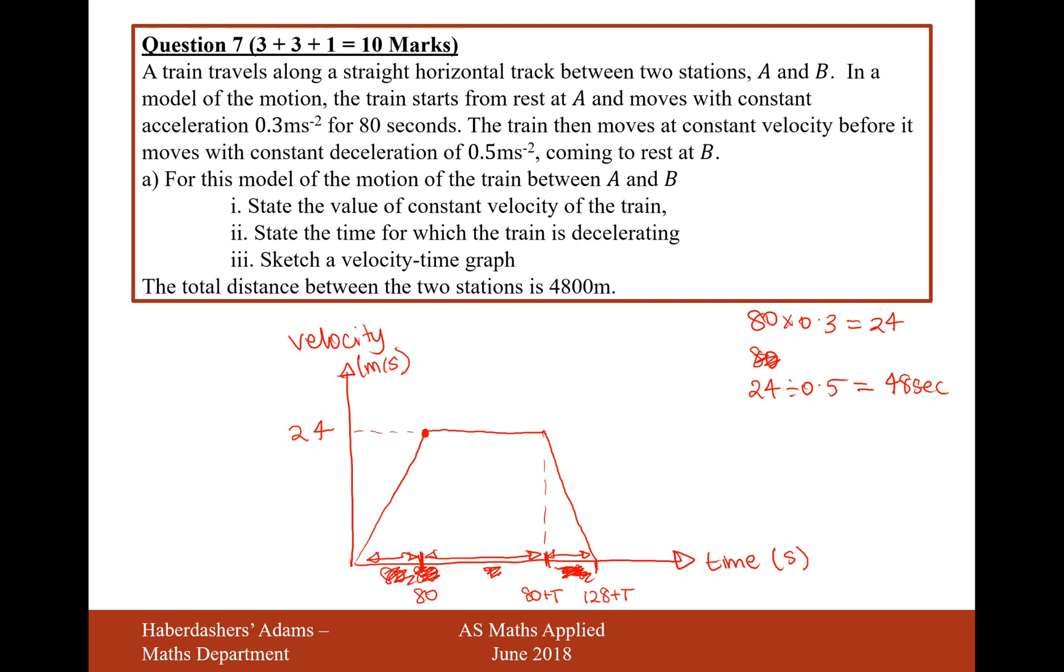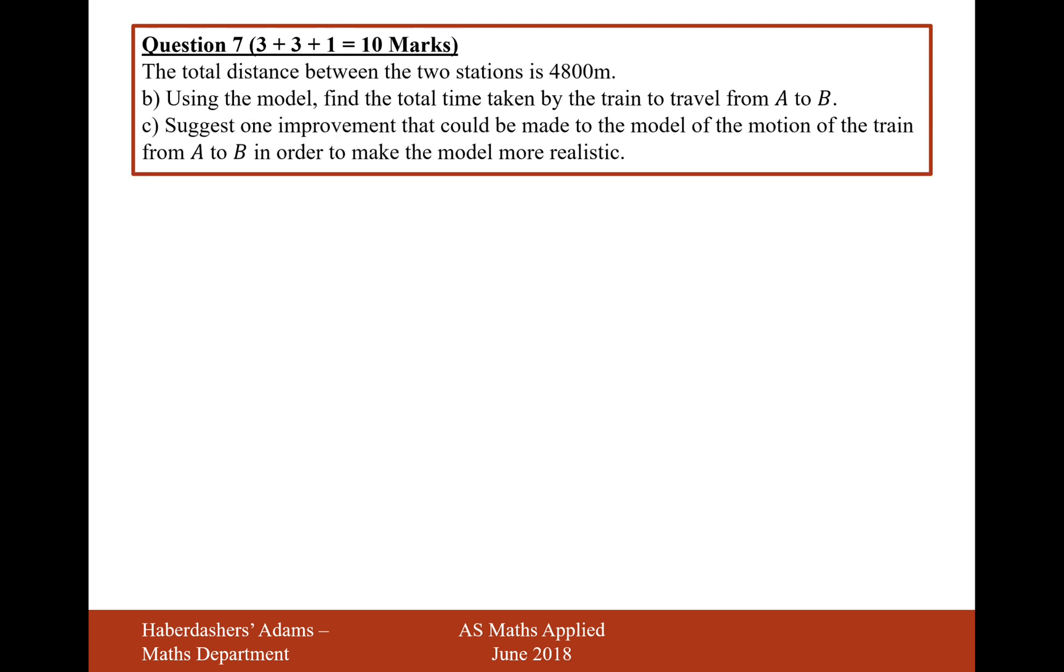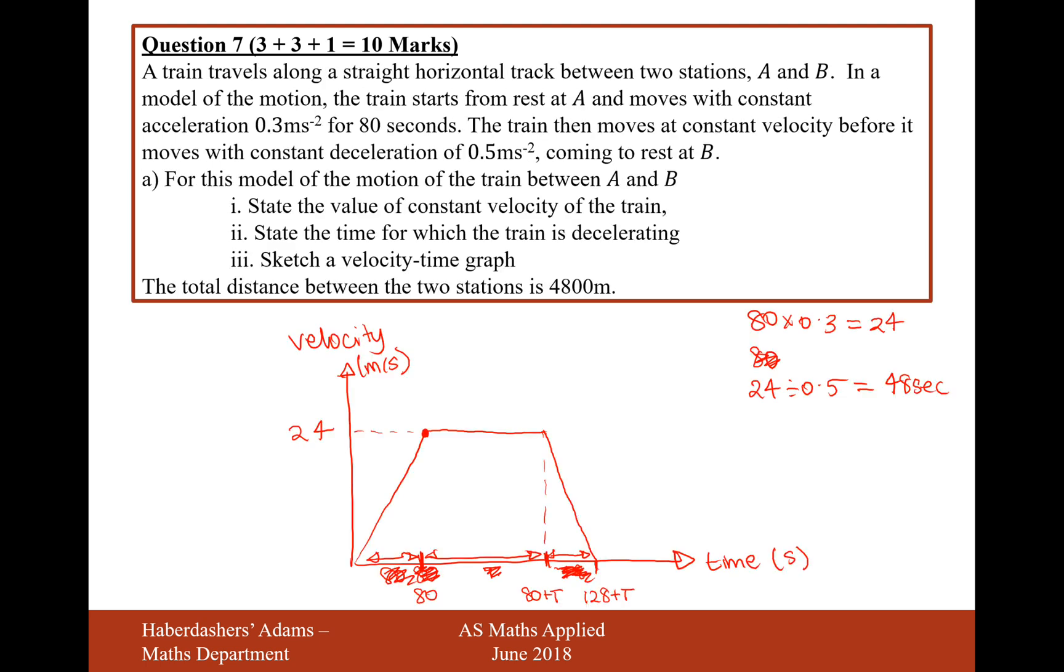Okay, so let's move on to the next part then. Now the total distance between the two stations is 4,800 metres. Using the model, find the total time taken by the train to travel from A to B, or in other words, work out what that capital T value was. So what I can do with my model here is the area under the graph equals the distance travelled. That's the key part of this thing here.